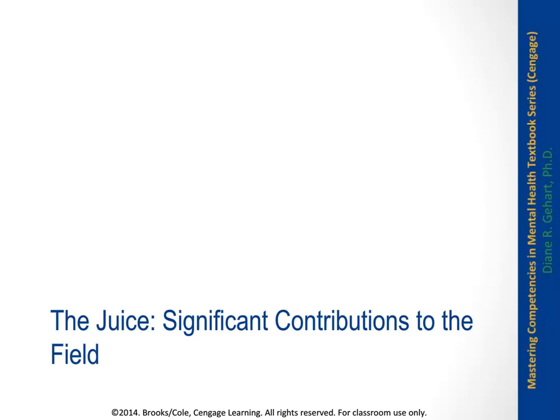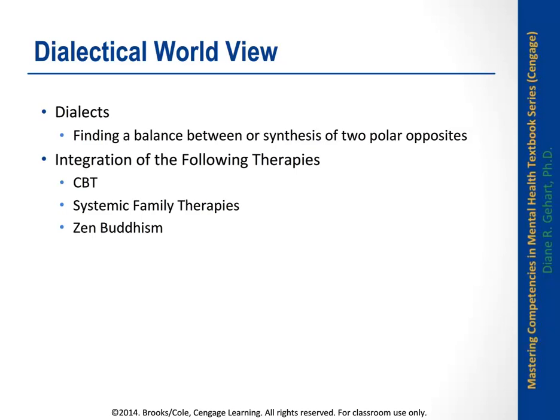When Linehan started working with persons diagnosed with borderline personality disorder, she began using standard cognitive behavioral therapy techniques and discovered they don't work so well. She then integrated concepts from family systemic therapies as well as Zen Buddhism. These theories are not linear — they look at interactive patterns. From these she identified the dialectical tension that exists in most of life. The classic dialectic is a thesis, antithesis, and a synthesis.